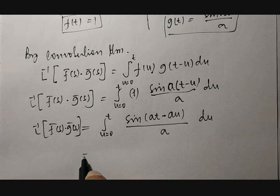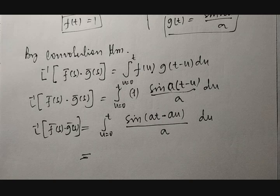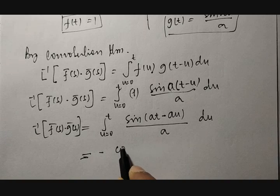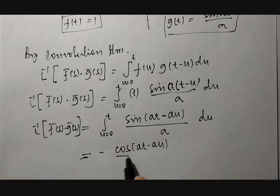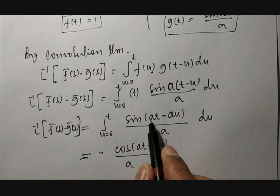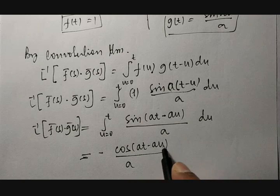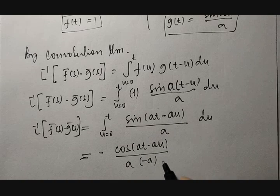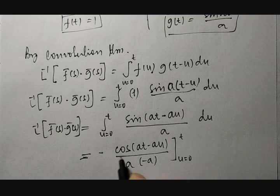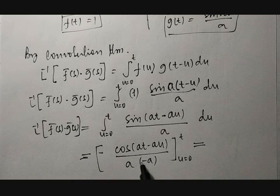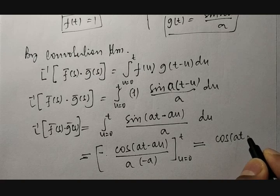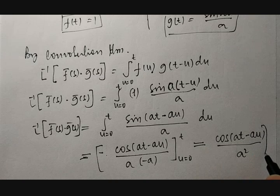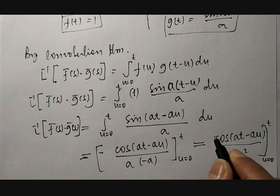Which is equal to: Laplace inverse of f̄(s) into ḡ(s) is equal to the integration from u equal to 0 to t of sin(at minus au) divided by a, with respect to u. Now, the integration of sin is minus cos. So this becomes: minus cos(at minus au) divided by a, then divided by a again, evaluated between u equal to 0 to t. The two negatives balance, giving cos(at minus au) divided by a squared, from u equal to 0 to t.